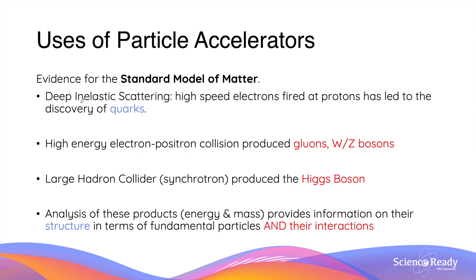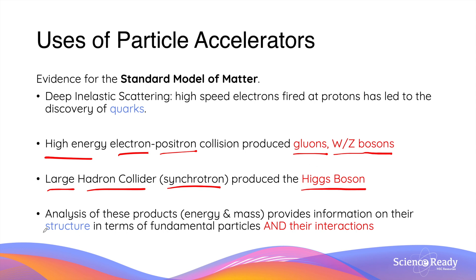In addition to the discovery of quarks, particle accelerators also provided evidence for other particles in the standard model. The high-energy collision between electrons and positrons produced gluons as well as the W and Z bosons that mediate the weak force. A particular particle accelerator called the Large Hadron Collider, which is a synchrotron, produced the Higgs boson in 2013. By analyzing these products, we are not only able to obtain information on the structure of fundamental particles, but also study the forces and interactions between these particles — in this case by discovering the various bosons in the standard model of matter.